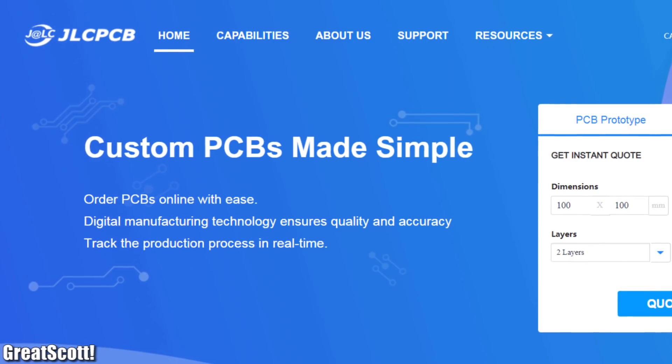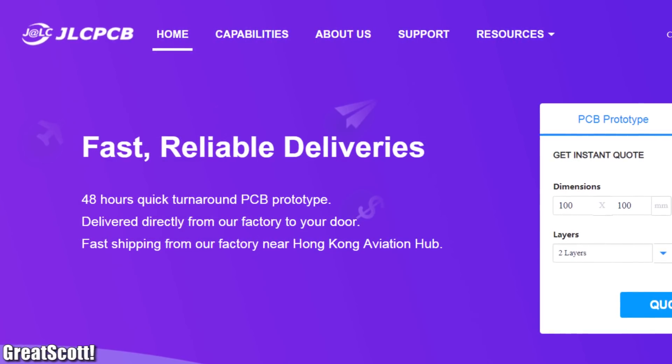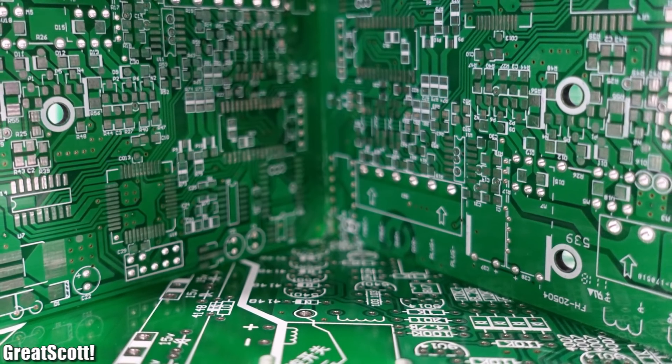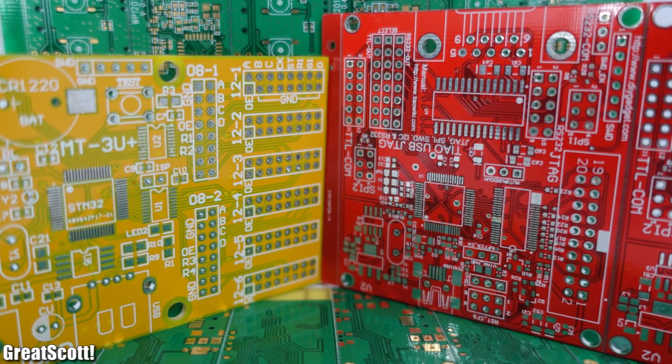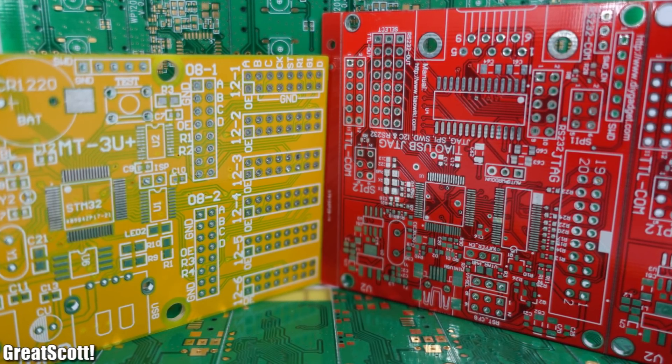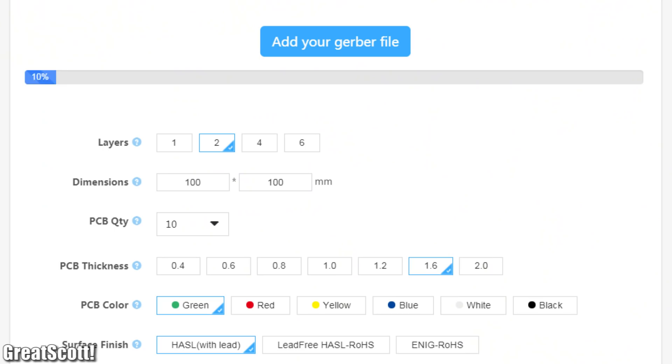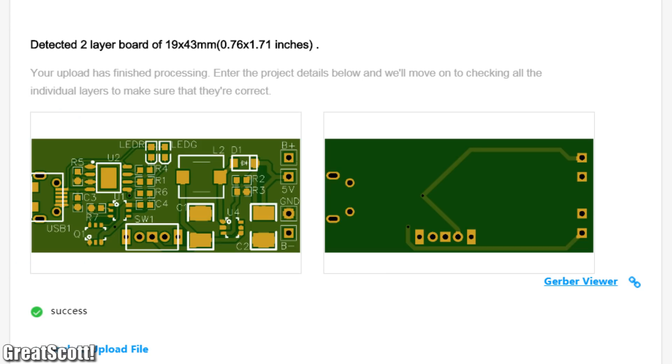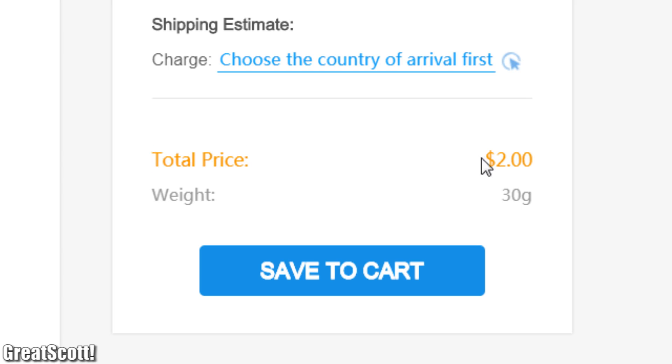This video is sponsored by JLCPCB where you can get 10 professional PCBs with any solder mask color you like for the low price of only two dollars. Feel free to upload your Gerber files today to order your PCBs from JLCPCB.